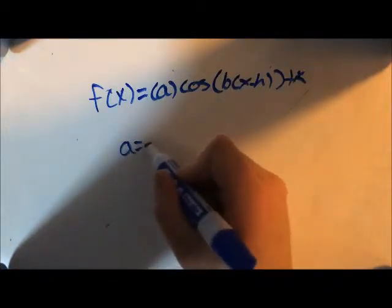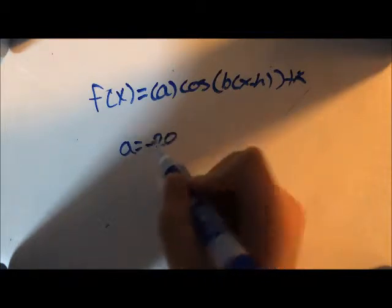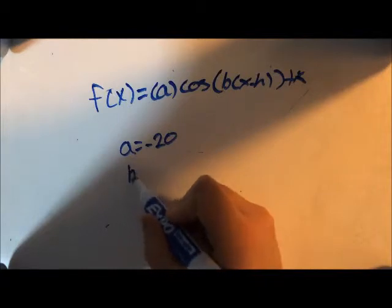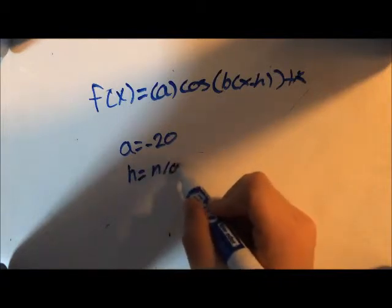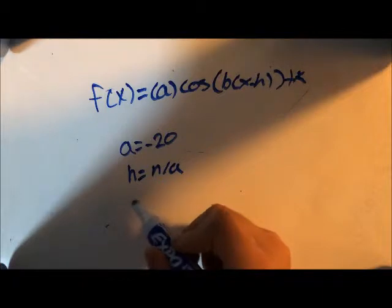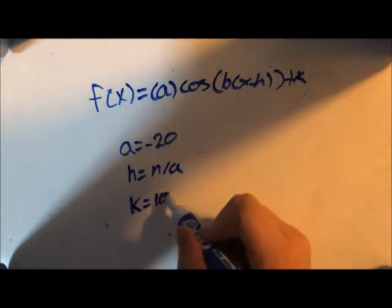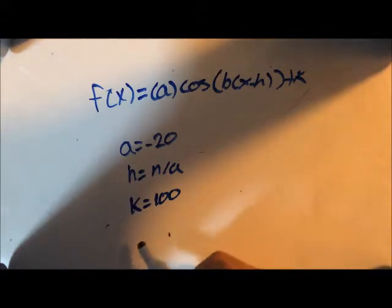The a value or amplitude of this graph is negative 20, which indicates two things. The cosine function is negative, meaning it will begin at the minimum value rather than the maximum, and that the maximum and minimum values are 20 units above and below 100. This means the maximum and minimum values are 120 and 80.